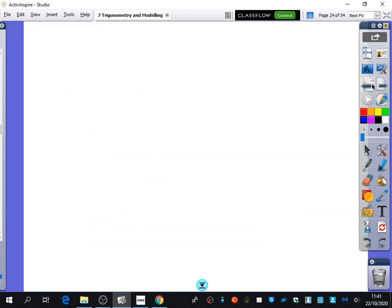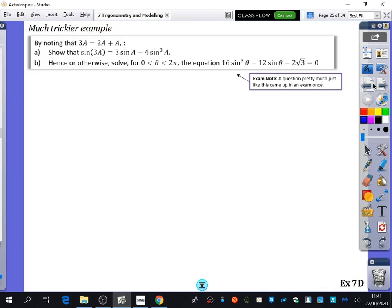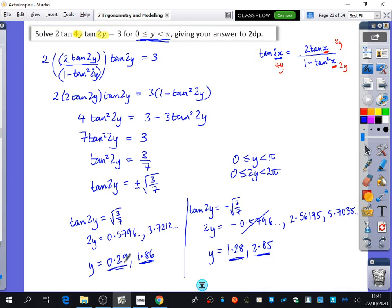So we are going to not do this trickier example. We're going to do some questions from exercise 7D, and then we'll do that trickier example at the end of our lesson.